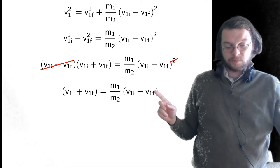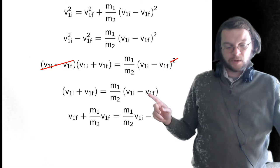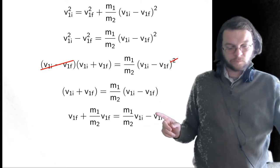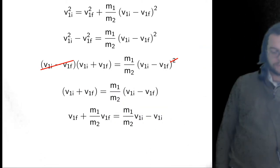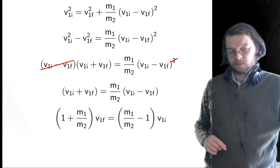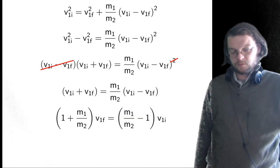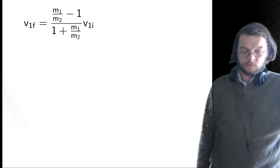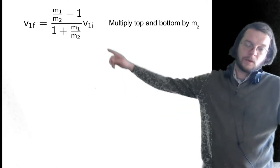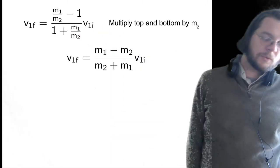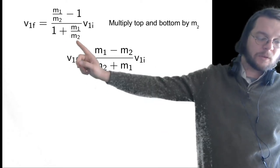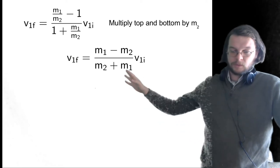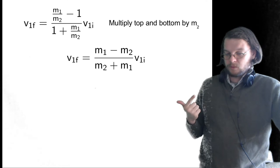Now I want to solve for V1F, so I put the V1F terms on the same side. I add M1 over 2M2 times V1F to both sides and subtract V1I from both sides until I isolate V1F. Then I factor it out, and finally multiply the top and bottom by M2 over M2. So M1 over M2 becomes M1, and 1 becomes M2, giving M1 minus M2 in the numerator and M1 plus M2 in the denominator. This is what I told you we were going to get. The only ingredients that went into this are momentum conservation and conservation of total kinetic energy.